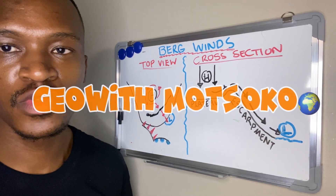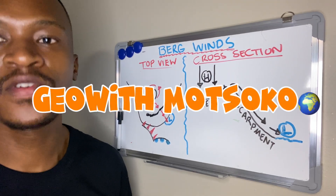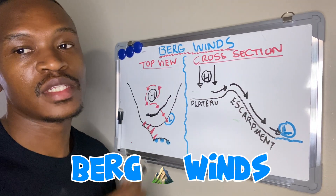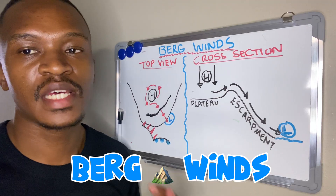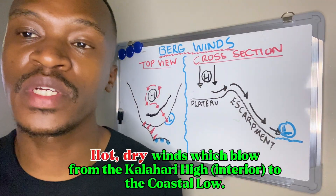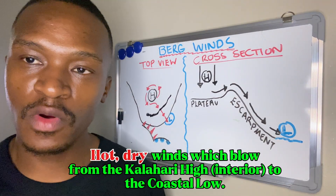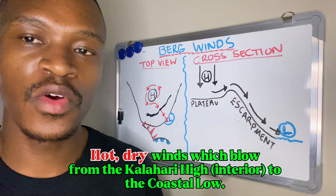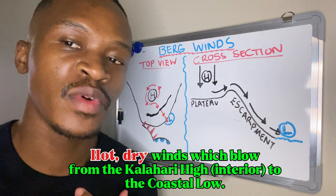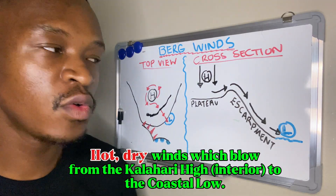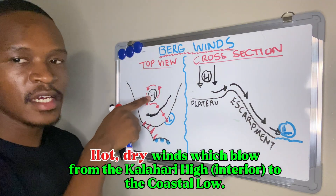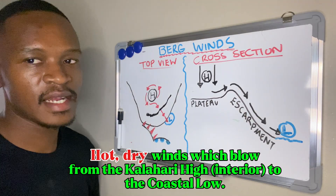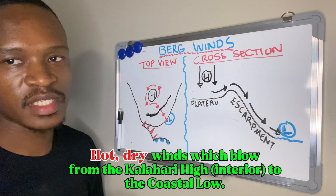Welcome to Geode Mozoku. In today's video we are covering the topic of berg winds. Berg winds are defined as hot dry winds which blow from the interior towards the coastal areas, or you can say they are hot dry winds which blow from the Kalahari High towards the coastal low.